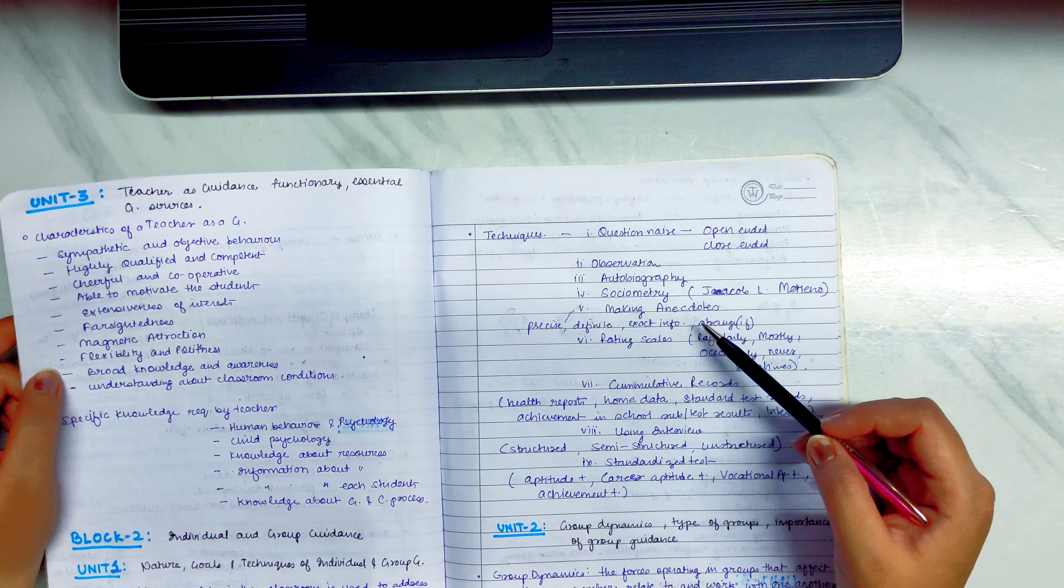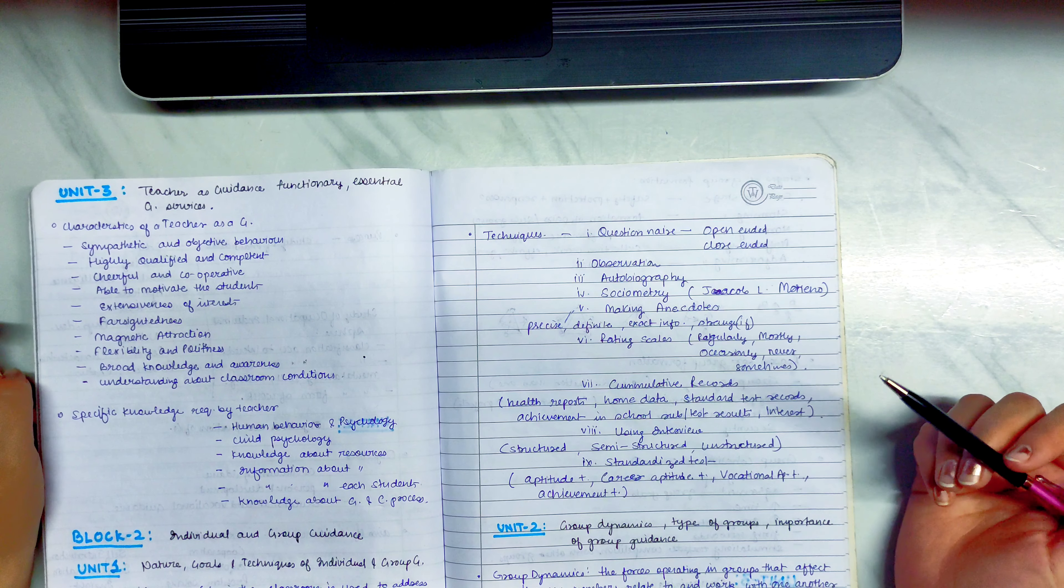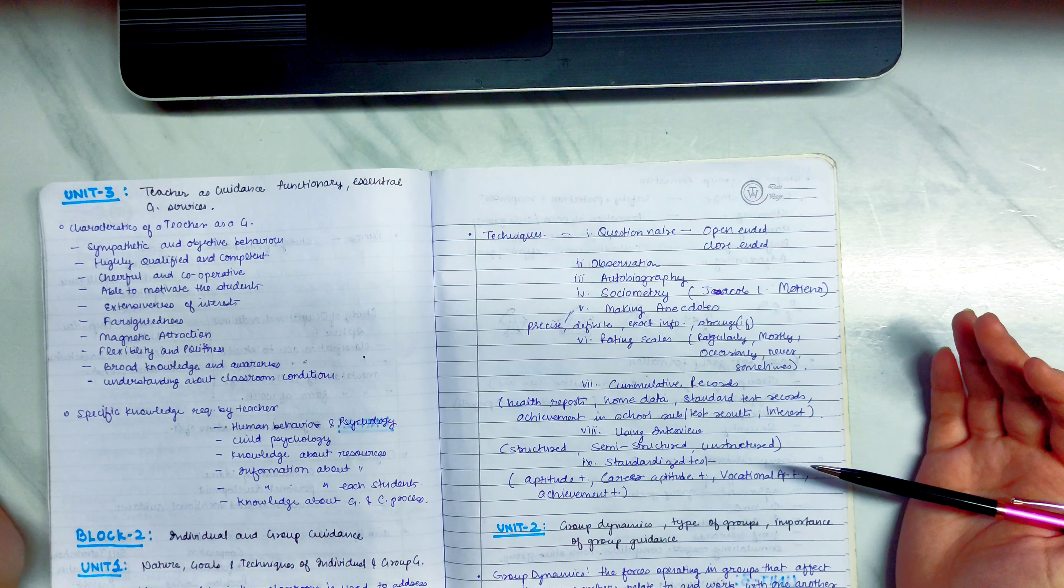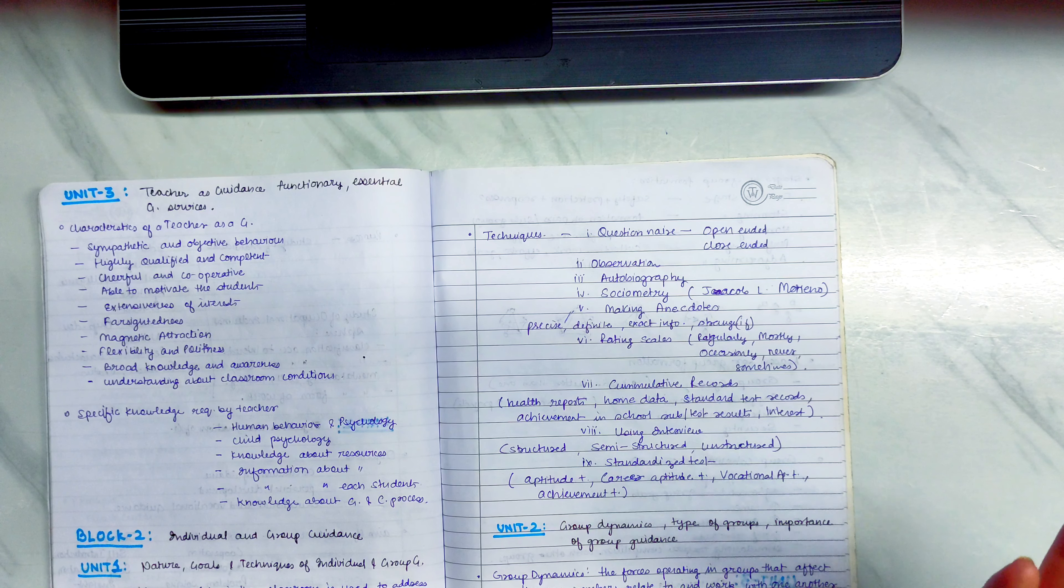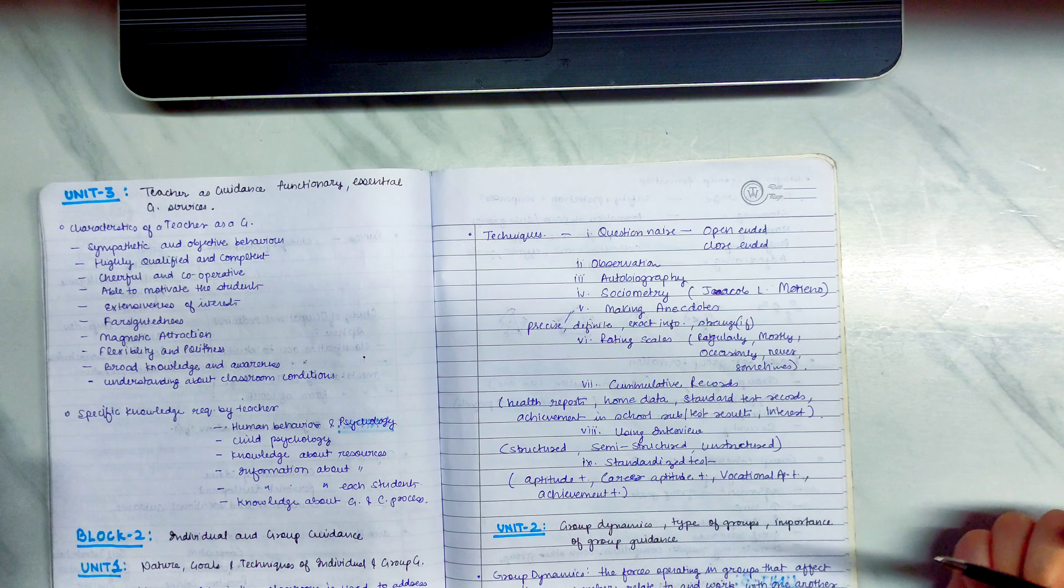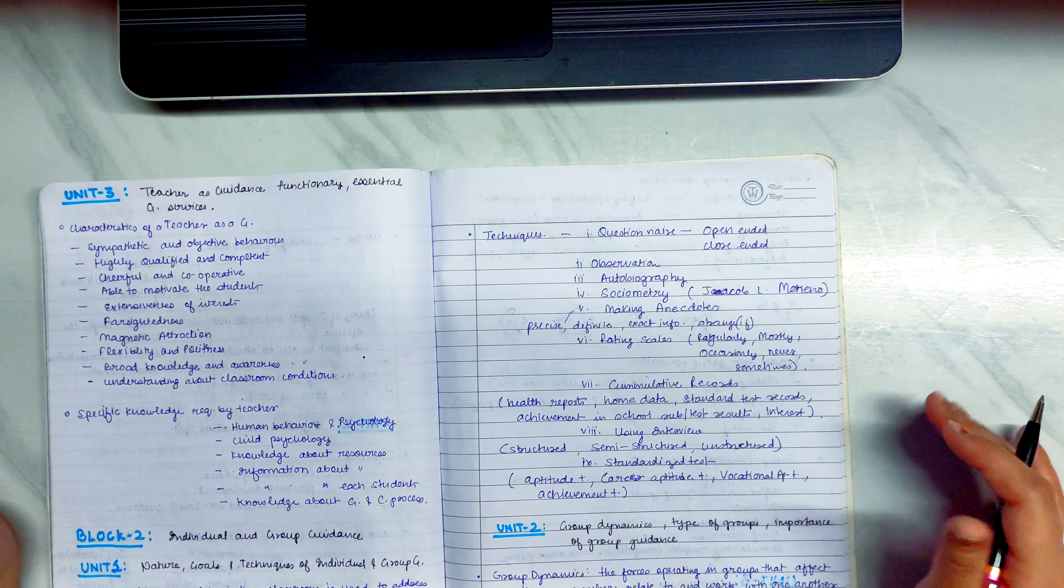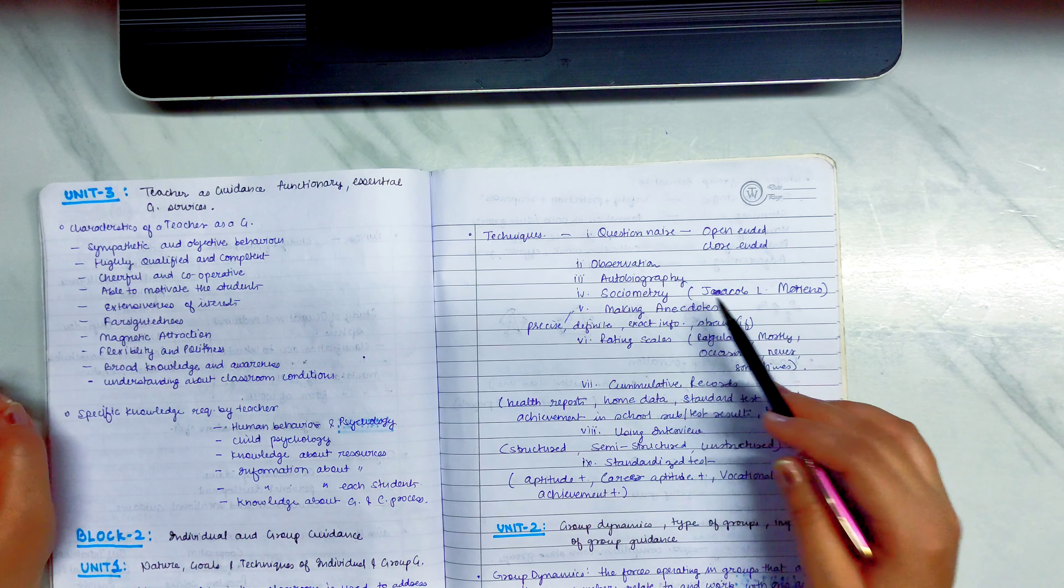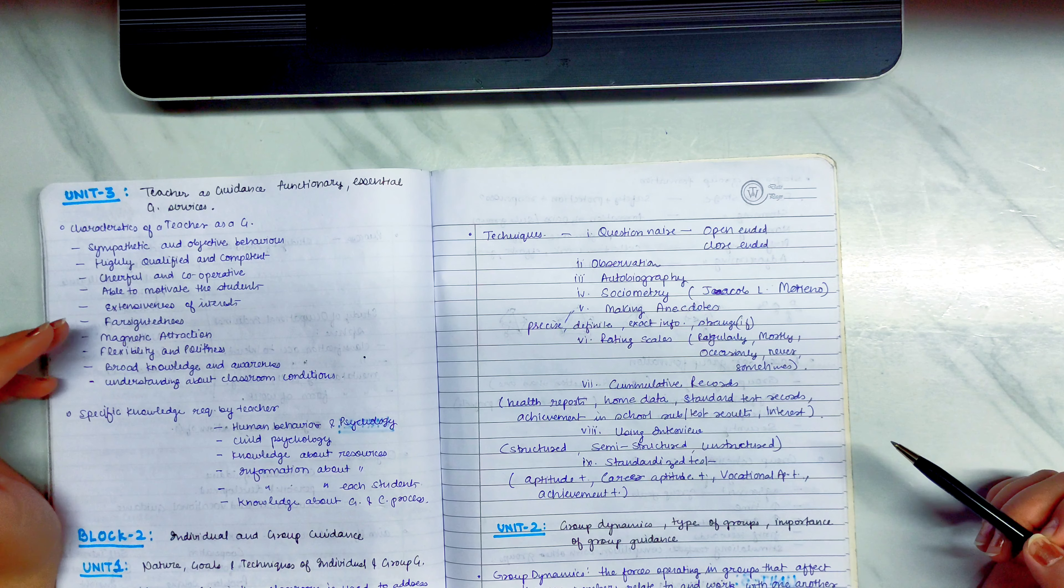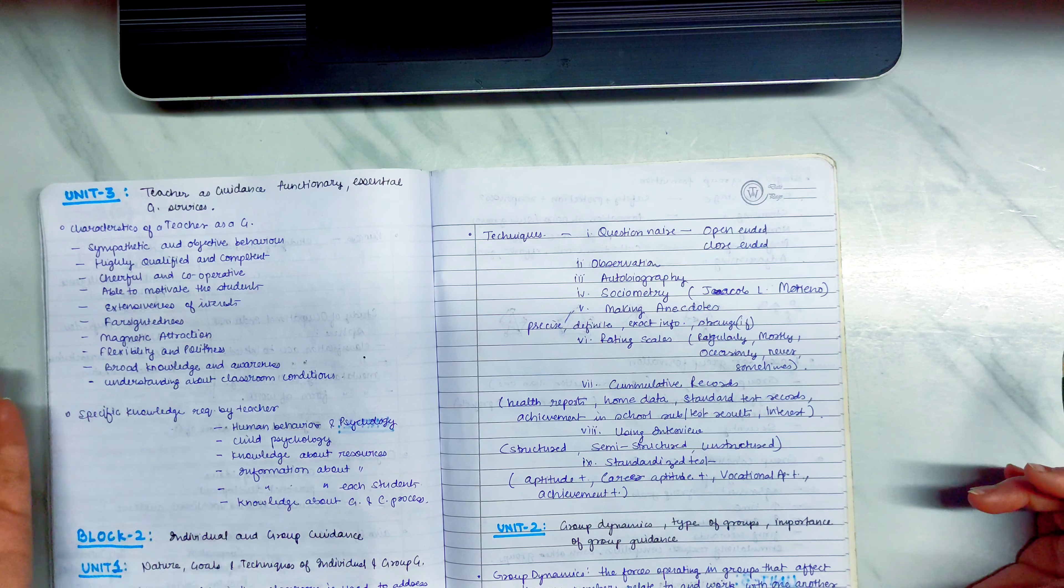Fourth is sociometry. It was given by Jacob L. Moreno. So, in sociometry, you can draw a circle or if a child is sitting. In sociometry, whether the child has good bonding. Like one child is meeting with three children. Each individual is an agent. So, in sociometry, it is observed that there is a gathering of children who are in isolation.